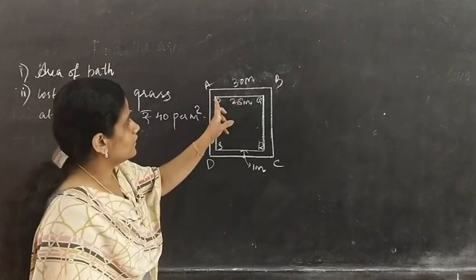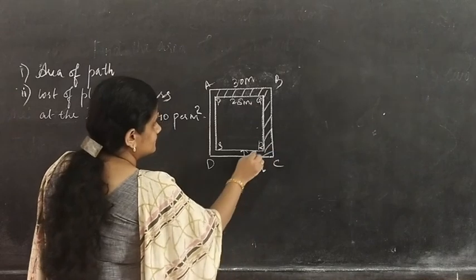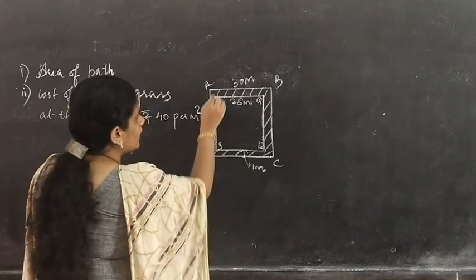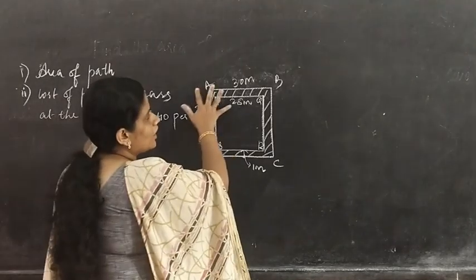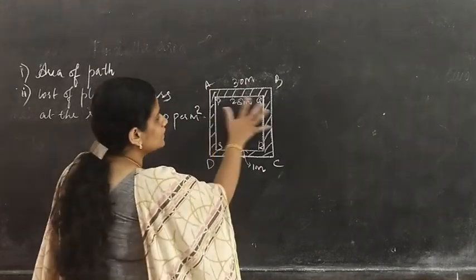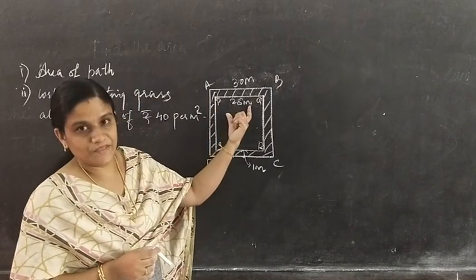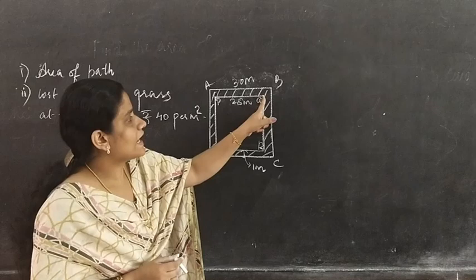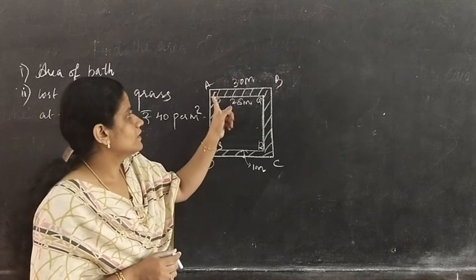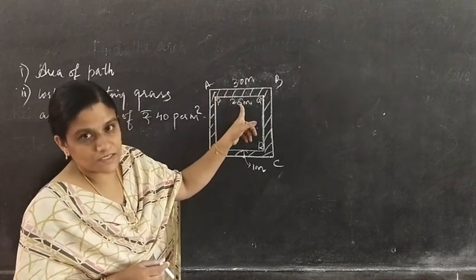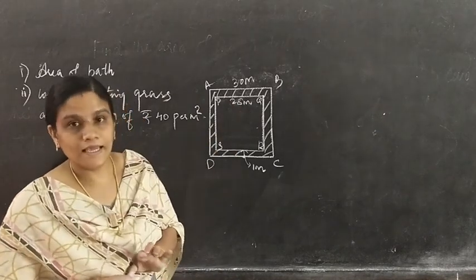The shaded region will be the path and the width of the path is 1 metre. We have to find the area of the path, which means area of square ABCD minus area of square PQRS. We know ABCD is 30 metres. For PQ, since 1 metre path is on each side: 30 minus 1 minus 1 equals 28 metres. So PQ equals 28 metres.